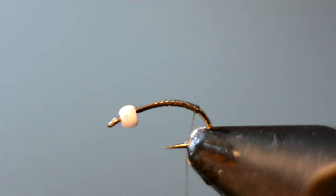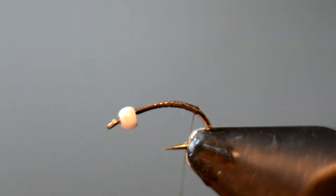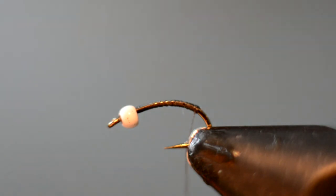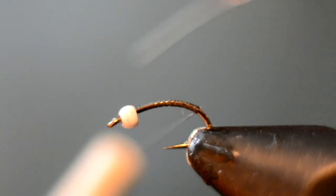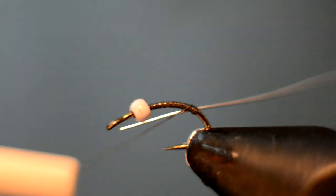For this fly I started off with some 8/0 black thread, and that's going to be our base for the body. It's a really easy, simple thread body. And we're going to tie in some wire now. It's the brassie size ultra wire in silver. So we'll go ahead and just tie that in the back of the hook.